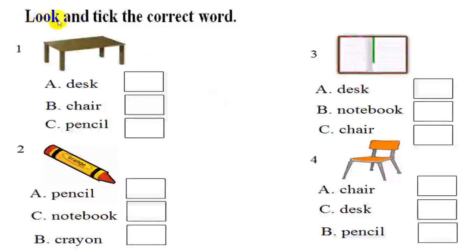Four. Look and tick the correct word. One. What's this? It's a desk. So we choose A. The others, you do it the same. Ok.